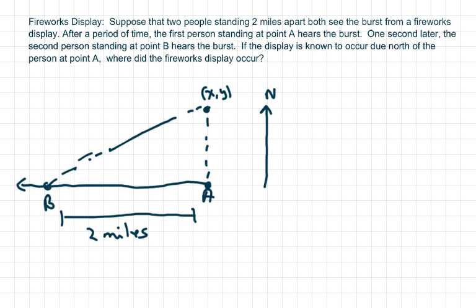So basically, we first need to note that all points where a burst could take place, such that the time difference would be the same, would form a hyperbola with A and B as the foci, however you want to say it. So I'm not drawing it as such, but I'm putting the A and B. So it's person A and B.